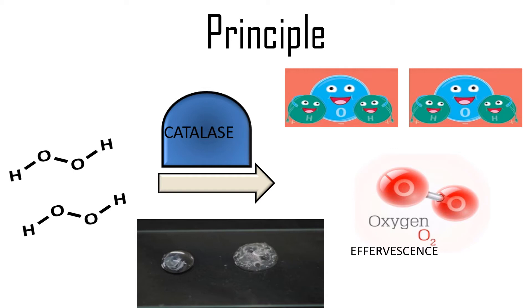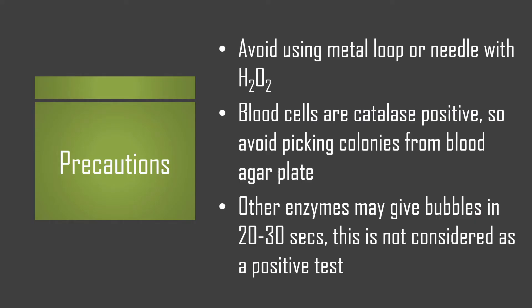In a slide test, you add the culture to hydrogen peroxide and look for effervescence within 10 to 20 seconds. If effervescence is observed, the test is considered positive. If no effervescence is observed, the test is considered negative.